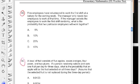So we have number 33. It goes something like this: Five employees have volunteered to work the first shift at a bakery for the coming weekend. The manager only needs two employees to work at that time. If the manager selects employees to work the first shift randomly, what is the probability that two particular employees will work together?